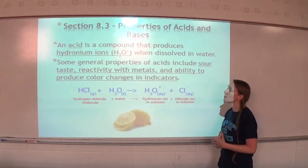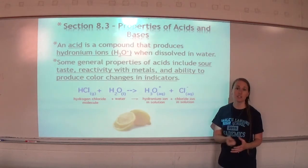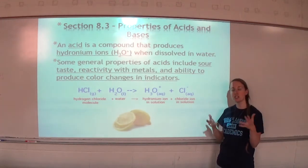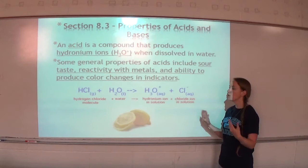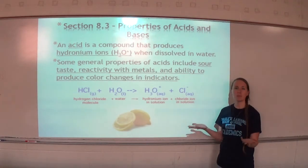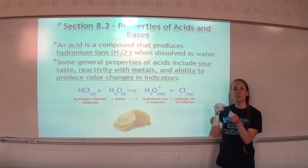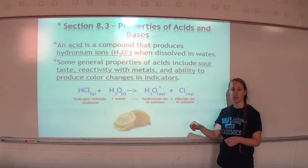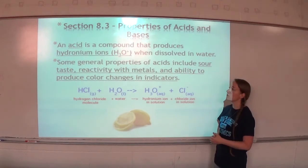And ability to produce color changes in indicators. Indicators are chemicals that change color as pH changes. I'm sure you've used pH papers or litmus papers before. Those have been soaked in an indicator, and that's why they change color when you put them in substances with different pHs.